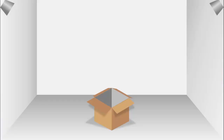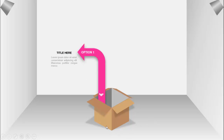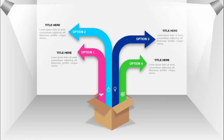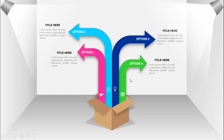In today's tutorial, I'm going to show you how to create a four-arrow options infographic slide in PowerPoint. I've created a 3D room with an open box and some lights. When I click, the first arrow comes along with detailed text. Each click reveals a new option with a different color combination — option two, three, and four — followed by a light effect.